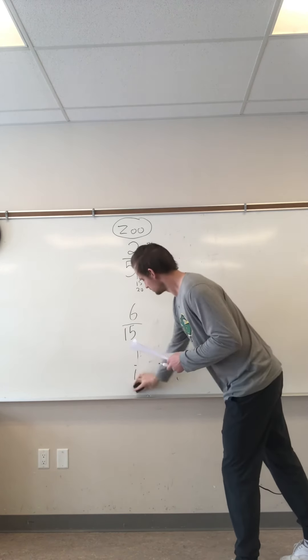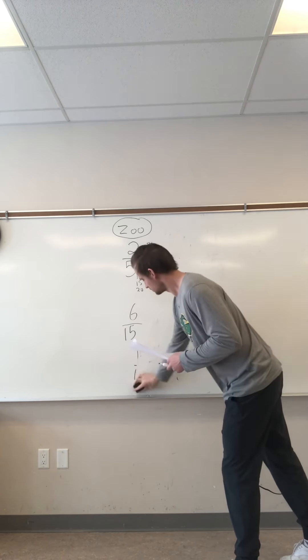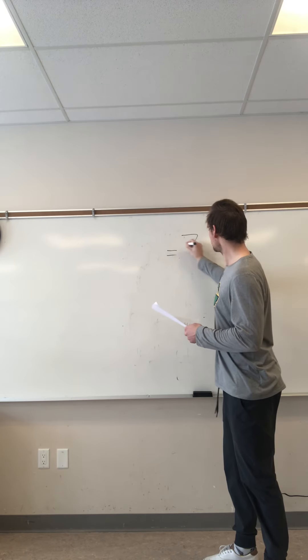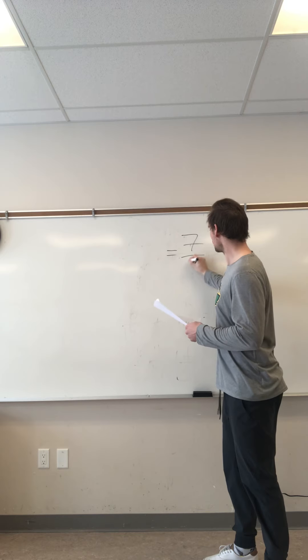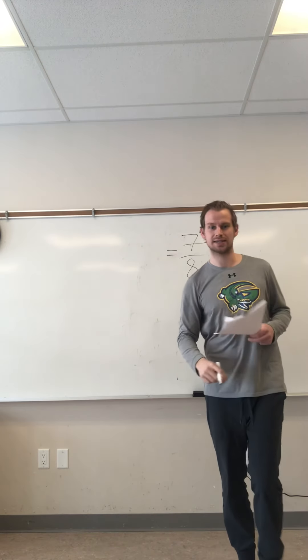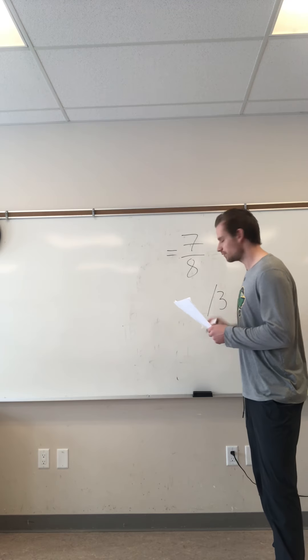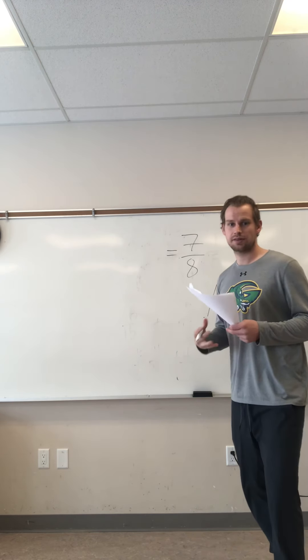So there's question four — it's not as bad when you break it down. You look at your zoo, your museum, then read through the question. Your total is out of three. Part A was the zoo, part B the difference of fractions was one over fifteen, and part C — what fraction of the class did not vote — was four out of fifteen. Okay, let's move on to question number five.